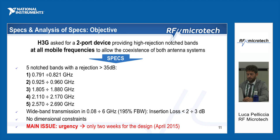The first notch band is around 0.8 GHz, then we have another at roughly 0.95 GHz, another at 1.8 GHz, one at 2.1 GHz, and one at 2.5 GHz. Moreover, it is important to ensure wideband transmission in the range 80 MHz up to 6 GHz — a wide bandwidth with an insertion loss in the range of 2–3 dB.